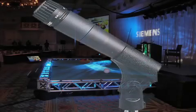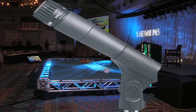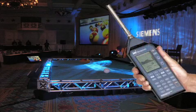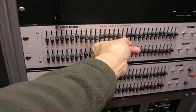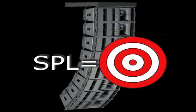The mic is turned up again until feedback. The feedback could occur at the same frequency or a different one. In any case, the RTA is again used to determine the frequency, and the equalizer is notched down at that frequency until the feedback stops. This process is repeated until the sound system reaches its target sound pressure level.